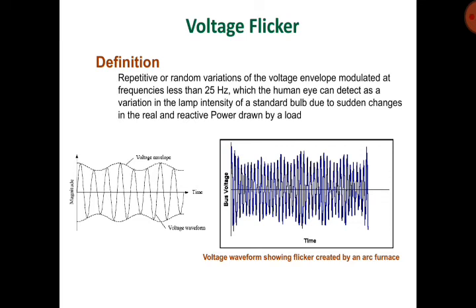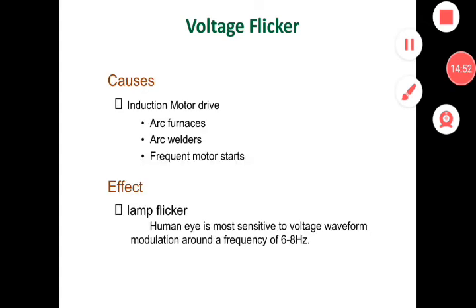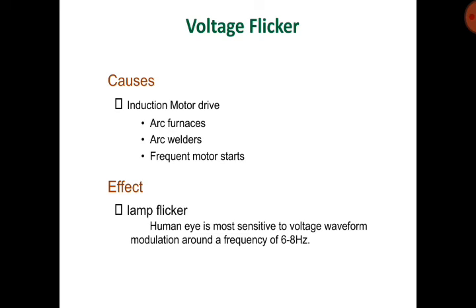Voltage flicker is the variation in lamp intensity of a standard bulb which the human eye can detect, due to sudden changes in the real and reactive power drawn by the load. Cases of voltage flicker include: induction motor drives, arc furnaces, arc welders, and frequent motor starts. The effect is lamp flicker. The human eye is most sensitive to voltage waveform modulation around a frequency of 6 to 8 Hz.